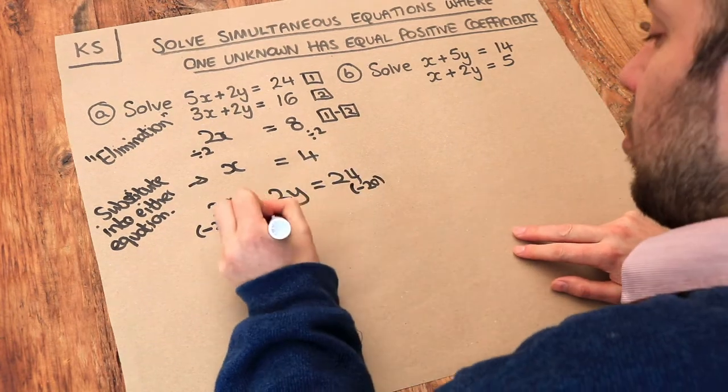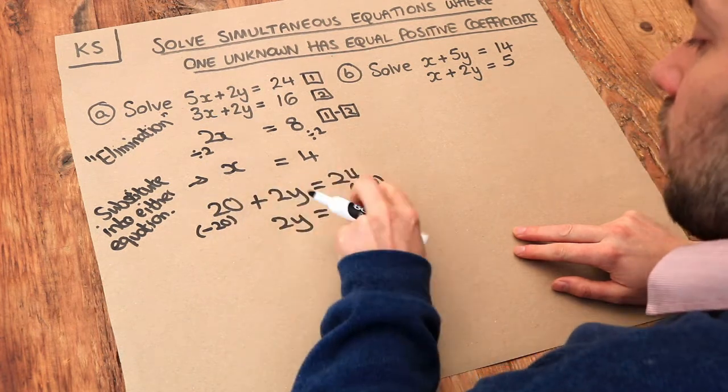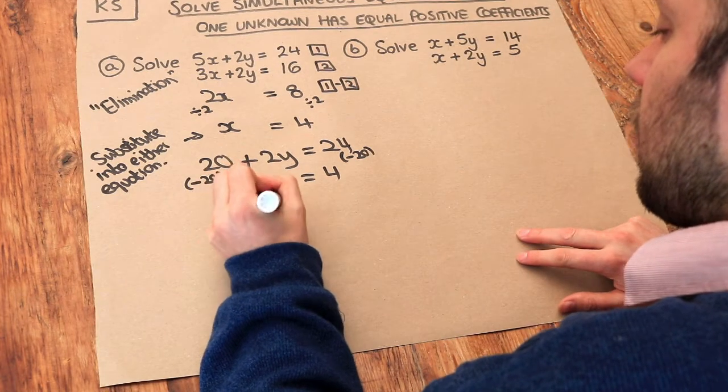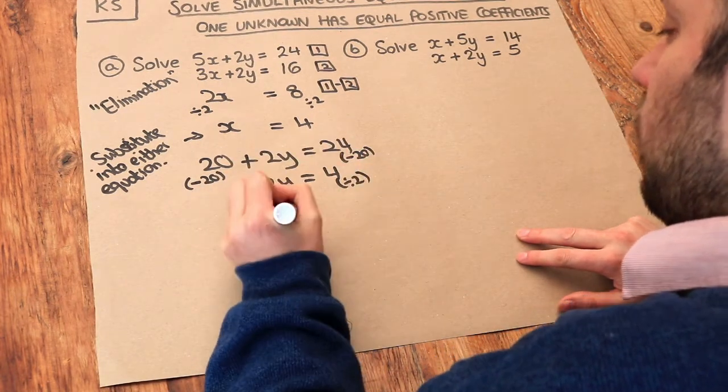That gets rid of this 20 to leave 2y. And 24 minus 20 is 4. And then to get rid of that times by 2 we just divide both sides by 2. And that means that y is equal to 2.